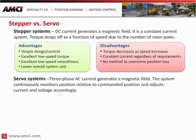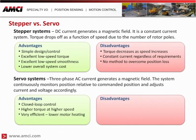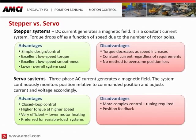Servo systems operate using three-phase AC current to generate the magnetic field. The system continuously monitors rotor position relative to command position and adjusts current, voltage, and frequency accordingly. Advantages of a servo system include closed-loop control, higher torque at higher speeds, efficient design leading to less motor heating, and better management of dynamic load changes during motion. Disadvantages include more complex control, required position feedback which increases cost, and a higher overall system cost and maintenance.